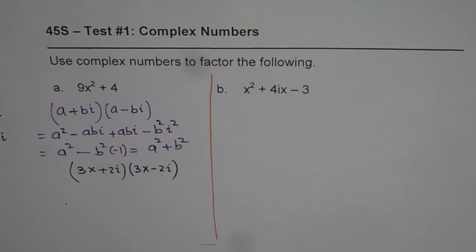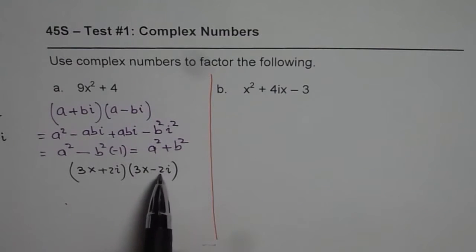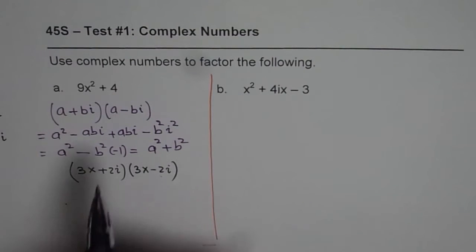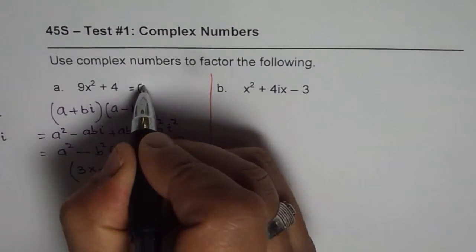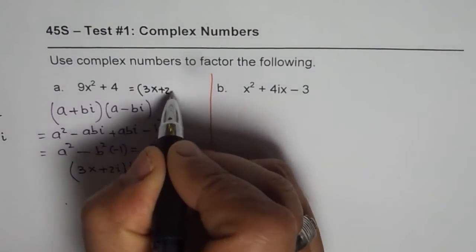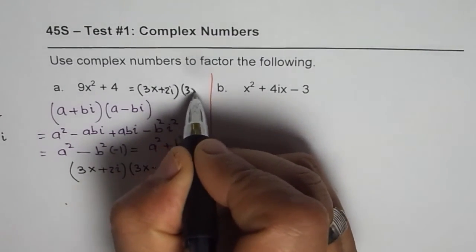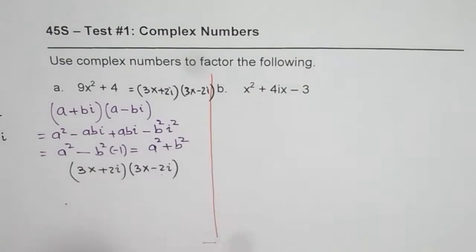When you multiply these conjugates you will get sum of squares, which is 9x² + 4. Do you see that? So that is what you get. So this could be written as 3x + 2i times 3x - 2i.